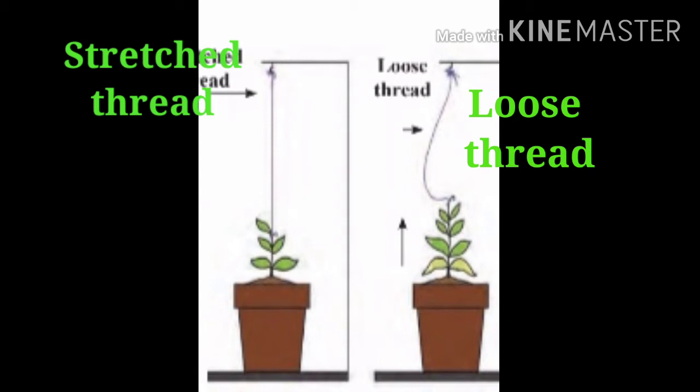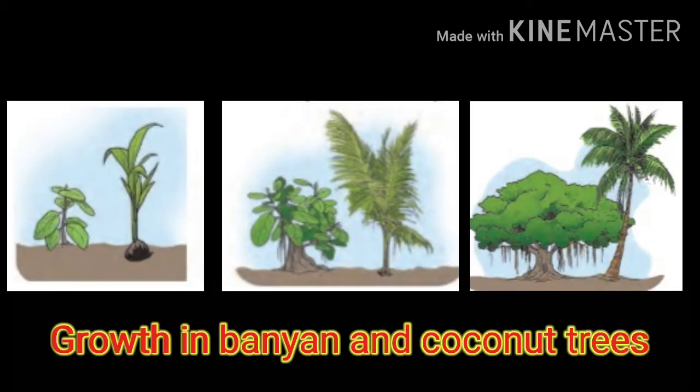In all plants, it is mainly the width and height of the stem that grows. As they grow, some plants develop branches while others do not. Though all living things grow, animals grow only for a certain period. Plants, on the other hand, grow as long as they live. The growth of living things occurs from within the body, which means that growth occurs in all parts of the body. Let's see growth in banyan and coconut trees.